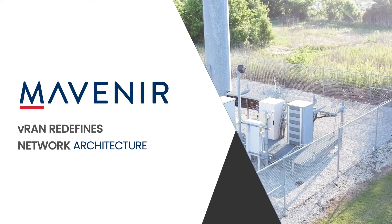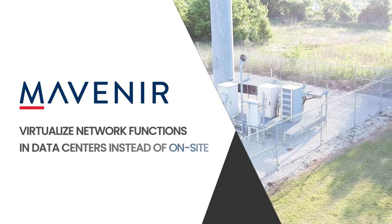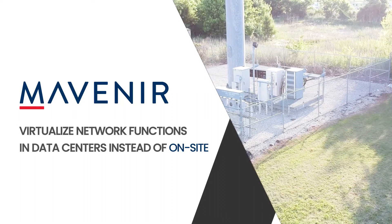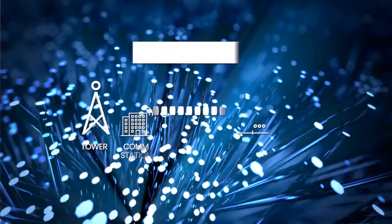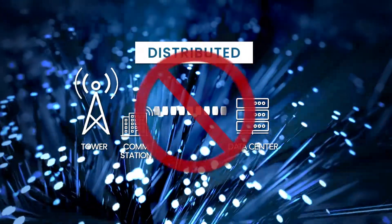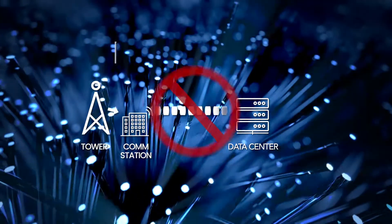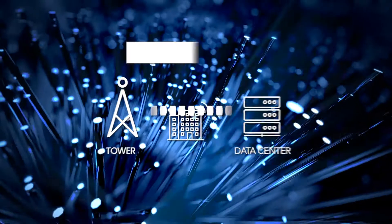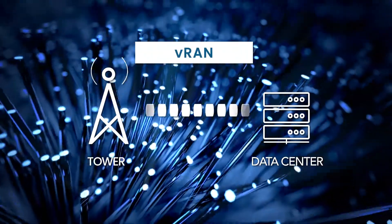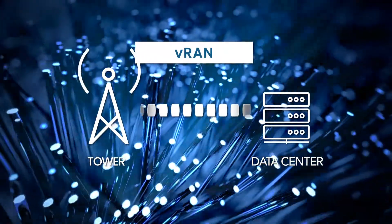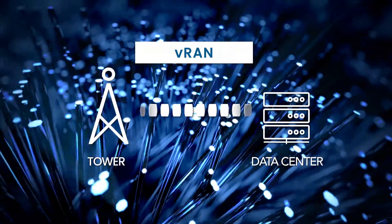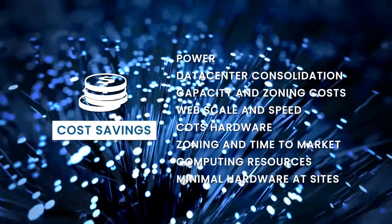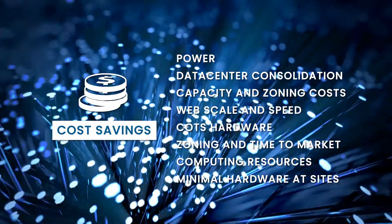VRAN from Mavoneer redefines the network architecture by virtualizing network functions in data centers instead of on-site. Interfaces between the data centers and the radio using XRAN front hall allow the use of IP Ethernet transport, opening more possibilities for connectivity. Imagine your network running on secure industry standard computing engines with IP transport instead of expensive proprietary hardware. Imagine the cost savings and the possibilities.